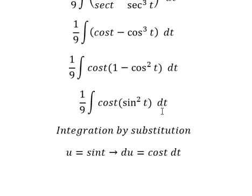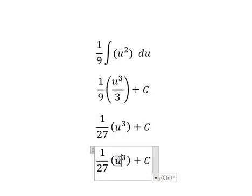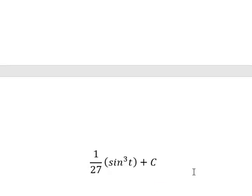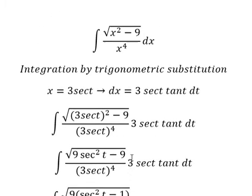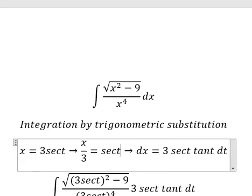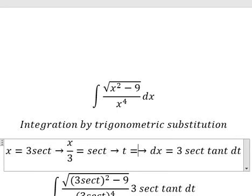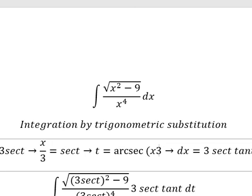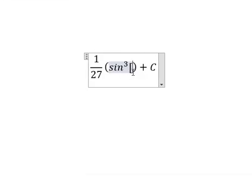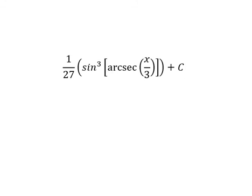Now back-substituting: u equals sin t. For t, we divide both sides of our original substitution by 3, giving t equal to arcsecant of x over 3. Substituting back gives us sin of arcsecant of x over 3. This completes the final answer. Thank you for watching.